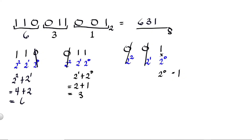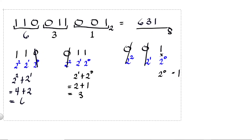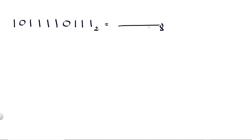For our third example, we're going to convert 101111011 binary into octal. Again, group the binary numbers by three starting from right to left. We have four groups.